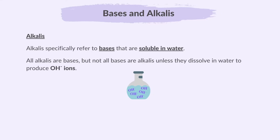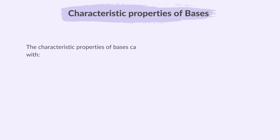It is these hydroxide ions that make the solution alkaline. For example, potassium hydroxide dissociates in water to form potassium ions and hydroxide ions. The characteristic properties of bases can be described in terms of their reactions with acids and ammonium salts.